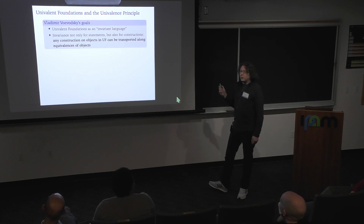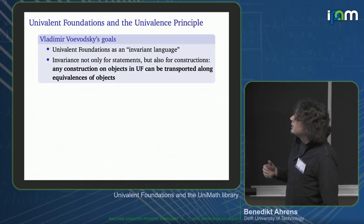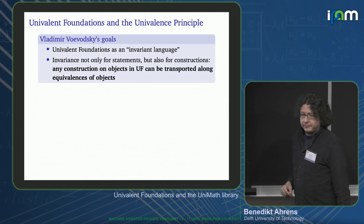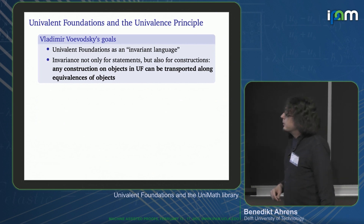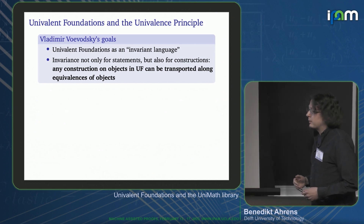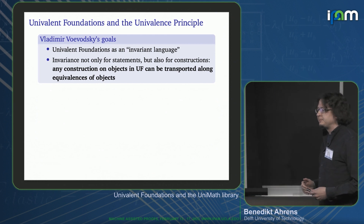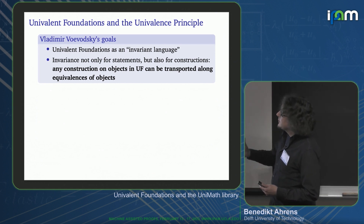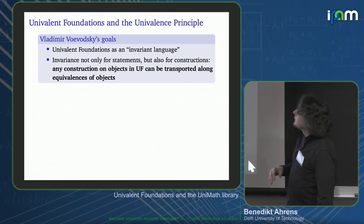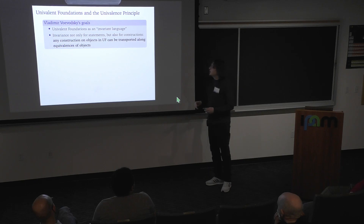Motivated by Makkai's work, Vladimir Voevodsky developed univalent foundations and the univalence principle with the explicit design goal of having an invariant language — going further than Makkai, having a language that is not just invariant for statements and properties, but also for constructions. That is, his goal was that any construction on objects in univalent foundations can be transported along equivalences of objects.